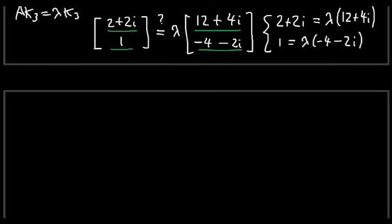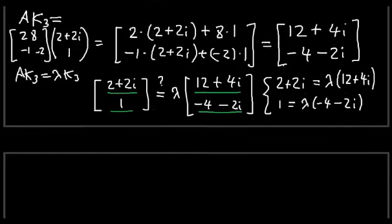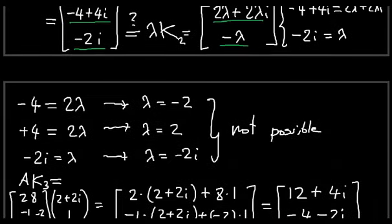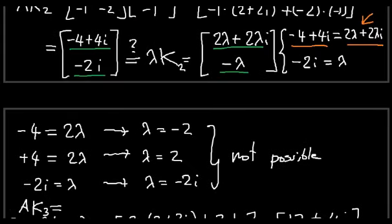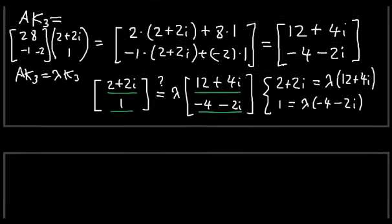This realization makes me think we made a mistake in the previous case with k2. When we compared the expressions for k2, we assumed lambda was real — that's how we got that minus 4 must equal 2·lambda for the real parts. But if lambda isn't real, then 2·lambda is not simply the real part of that expression. So what we did earlier was wrong, and we have to redo it.